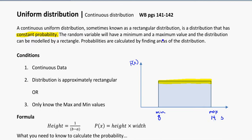Now the random value will have the minimum and maximum value, and the probability can be found by finding the area of the distribution that we're looking for. And what I mean by that is finding the area of a particular region you're interested in.